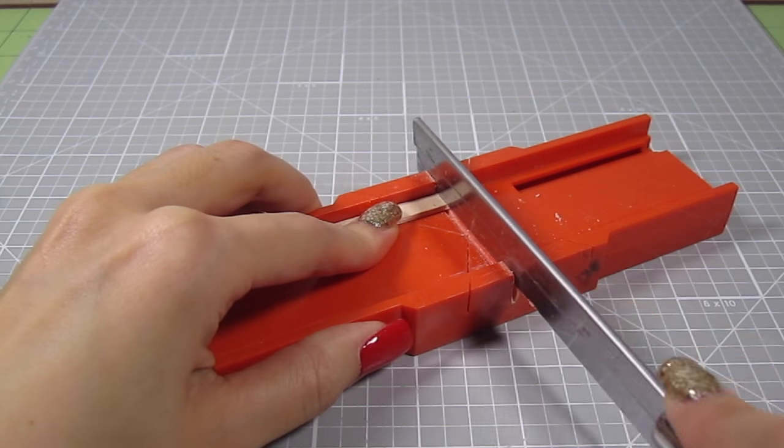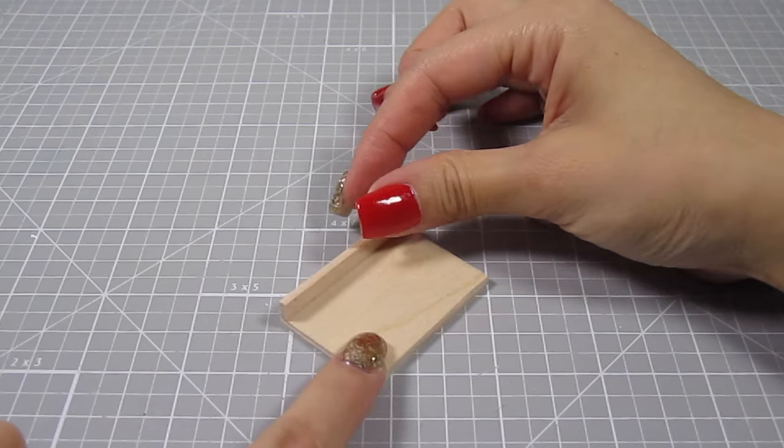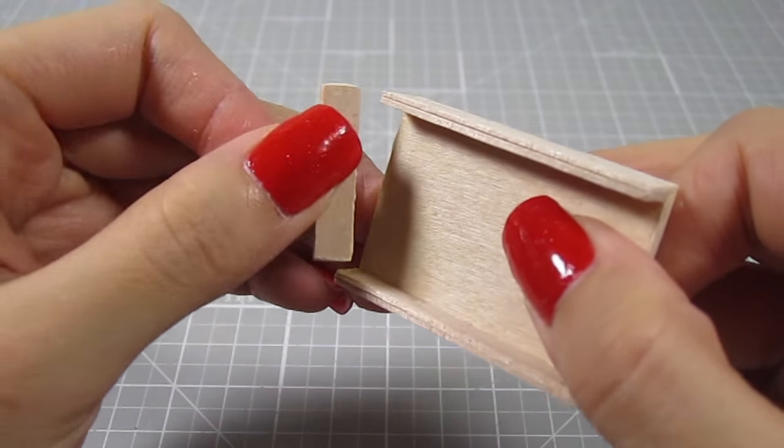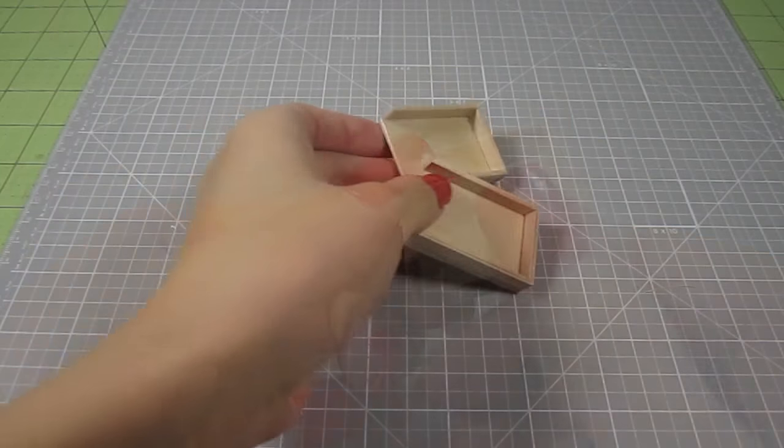Then use a miter saw to cut them out. For reference, it's 2 1 3⁄4 inch pieces and 1 1 inch piece. Add wood glue and position those pieces on top of the drawer bottom. Make 2 of these.